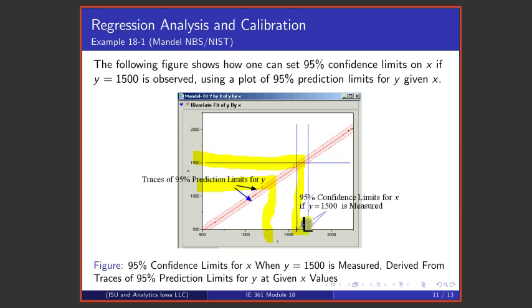That is for an observed y, one can ask what do we know about x? And basically one looks at where those prediction limit plots are cut and follows them down to the x-axis and uses that as a way to set confidence limits on the measurand if one has a particular value of y observed.